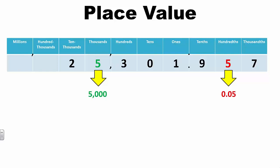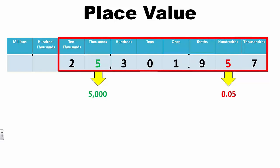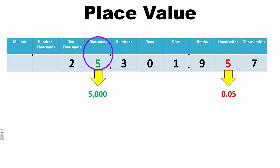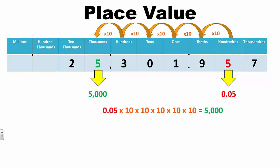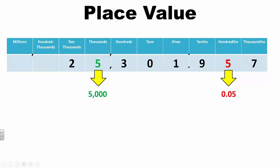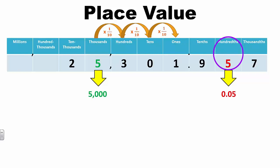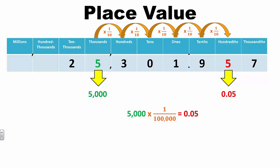Students apply their knowledge of place value to understand that in the number 25,301 and 957 thousandths, the five in the thousandths place is 10 times 10 times 10 times 10 times 10, or 100,000 times the value of the five in the hundredths place. Another way to think of this is five-hundredths times 100,000 equals 5,000. Likewise, the five in the hundredths place is one-tenth of one-tenth of one-tenth of one-tenth, or one-hundred-thousandth the value of the five in the thousandths place. This can be thought of as 5,000 divided by 100,000 equals five-hundredths.